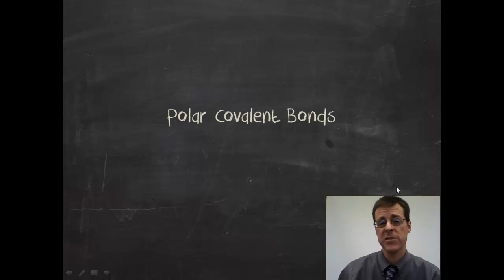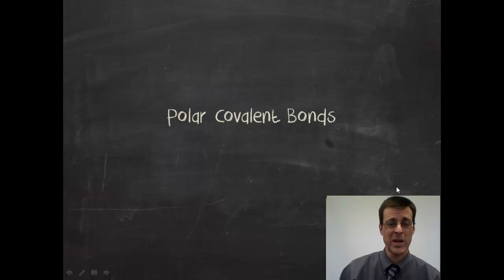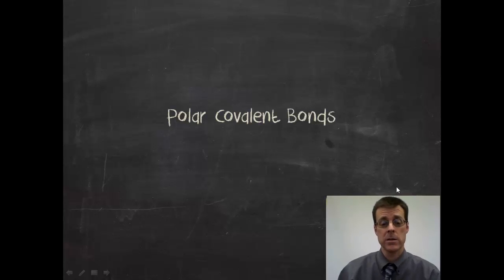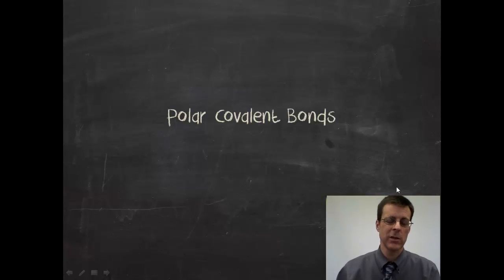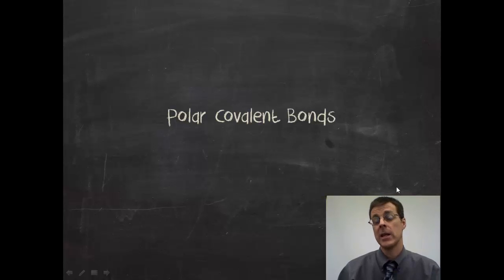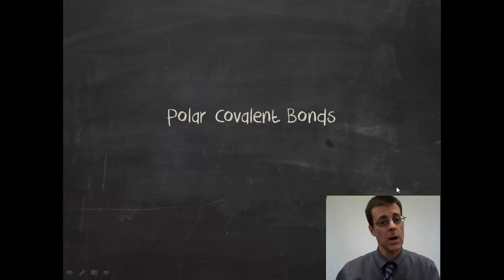We're back for a second video in chemical bonding. In the first one we looked at the basic types — ionic bonds and covalent bonds. Today we're looking at polar covalent, which comes out of the question I left you with: is there anything in between? I'm going to start you with a question: what's the chemical formula for coffee? We'll come back to that at the end. Until then, we're going to talk about polar covalent bonds.